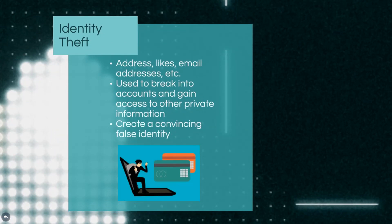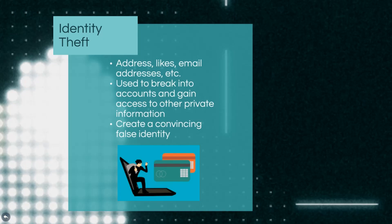A malicious actor can exploit information obtained from a digital footprint to steal an individual's identity. By analyzing data available online, an attacker may be able to hack into an individual's email account. Once they gain access, a hacker could take over control of the account, and the legitimate owner may be completely locked out. The malicious actor may gain access to more detailed info in the profile fields. Cybercriminals can manipulate this information to create a convincing false identity, which can then be used to apply for loans, open bank accounts, or even obtain medical care.